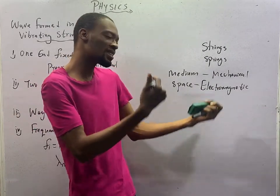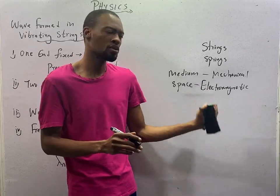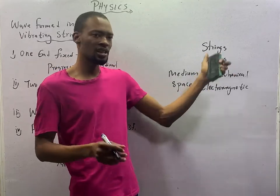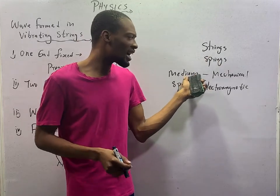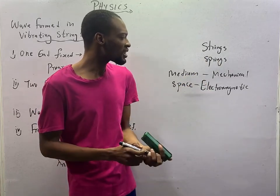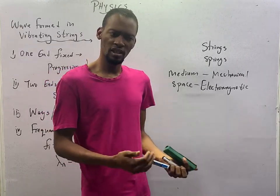Look at it. Waves in strings and springs. You can see it from the definition. They travel in springs. The medium are springs and strings. They are mechanical waves. Waves in strings are examples of mechanical waves. Let's proceed.